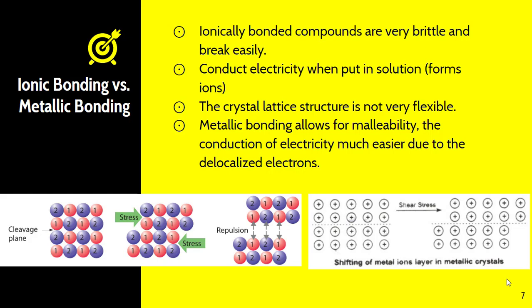Alright folks, one last thing about ionic versus metallic bonding. Keep in mind that ionically bonded compounds are very brittle and break very easily. This is due to the fact that it has a very, very rigid crystalline structure. Now they can conduct electricity when you put them into solutions as it does form ions, but notice what happens on the picture on the left hand side when that ionic compound breaks. When there is stress, it forces the crystal to be in a position where you've got two negative charges that are close to each other or two positive charges that are close to each other.